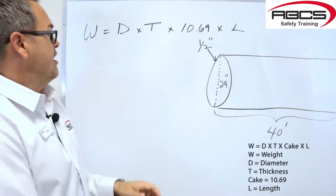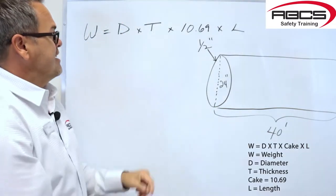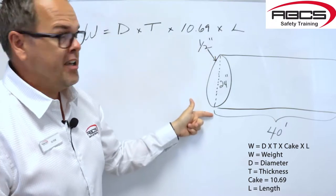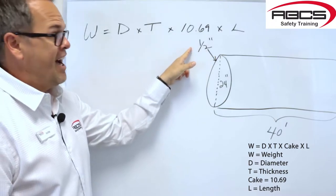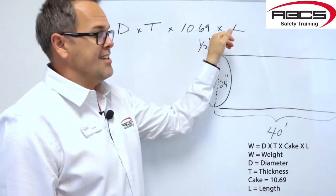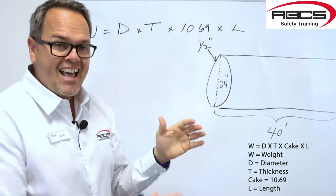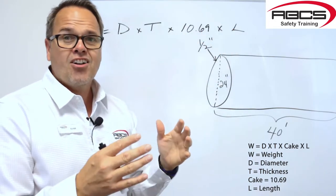We're going to use our formula. The weight of this pipe is the diameter, well it's 24 inch pipe, times the thickness of the pipe, which is half inch, times 10.69. That 10.69, that's a constant. I call it cake.